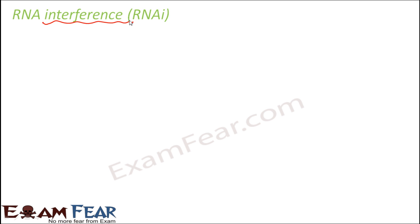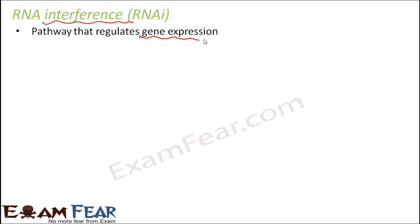Similarly, in RNAi a disturbance is created that impacts gene expression. In short, RNAi interference is a pathway that regulates gene expression. With genetic engineering we can control gene expression — we can decide which gene needs to be expressed and which does not. This pathway helps us regulate that.